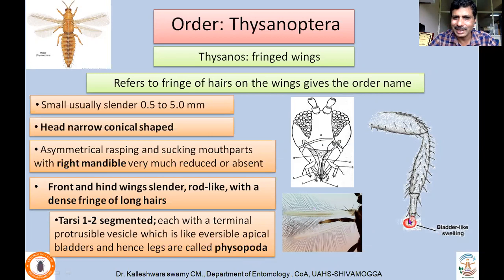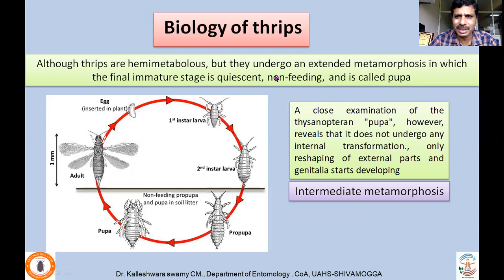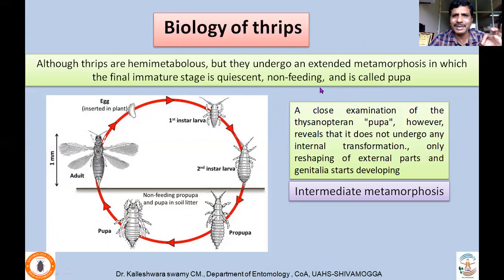Coming to the biology of thrips: thrips are hemimetabolous or hemimetabolous insects — they have only three stages: egg, nymph, and adult. However, thrips undergo an extended or intermediate metamorphosis in which the final immature stage is quiescent, non-feeding, and is called a pupa. Eggs are usually inserted into plant parts. First and second instars feed normally, whereas the pro-pupa (third stage) and pseudo-pupa (fourth stage) are non-feeding, quiescent stages.